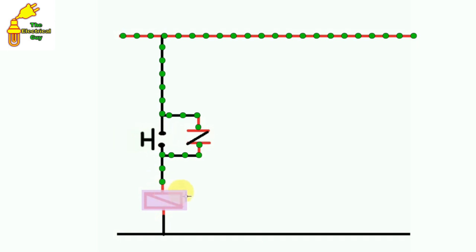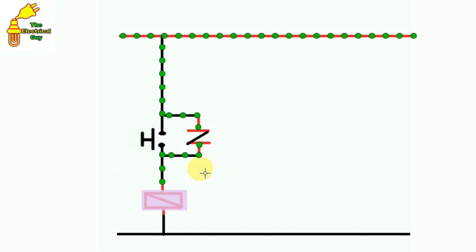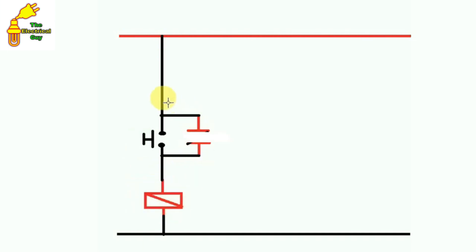So when the contactor turns on it becomes NC. Now even if we release this push button, still this contactor remains on because this auxiliary contact has become NC and current is flowing through this auxiliary contact to the coil of the contactor. The contactor will remain on always. Now if we want to turn off this contactor, how can we do this?